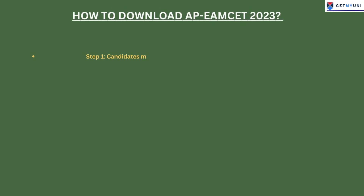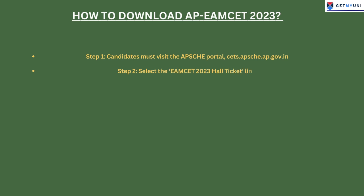Step 1: Candidates must visit the APSHI portal. Step 2: Select the EAMSET 2023 Hall Ticket link. Step 3: Enter the applicant's registration number and date of birth to access the document.